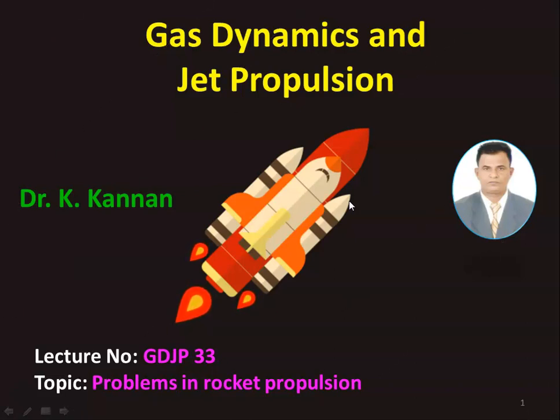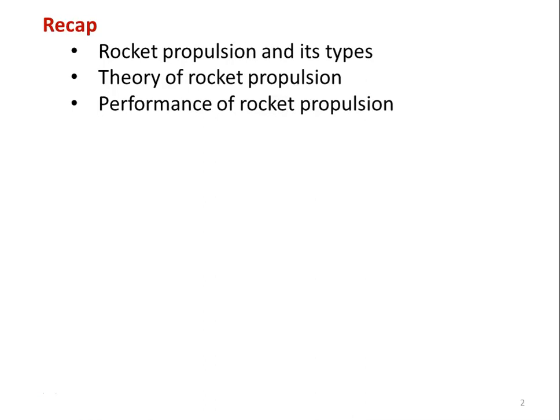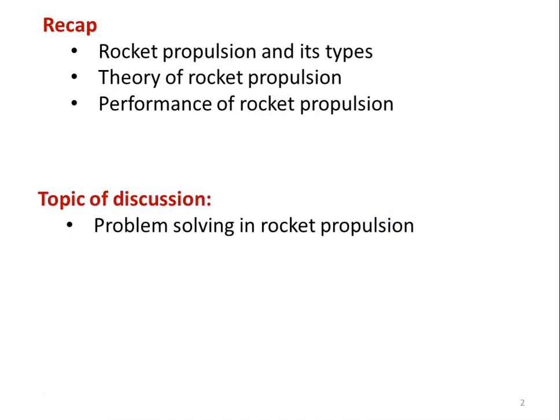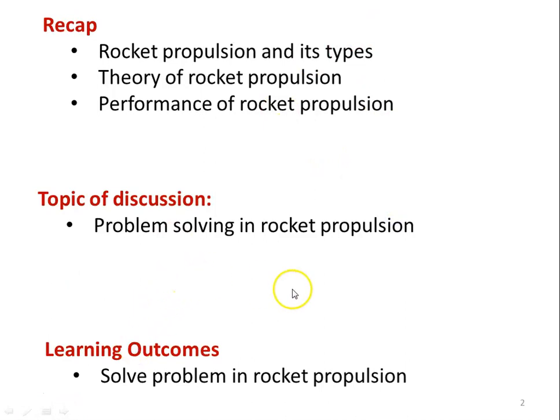This is lecture number 33 and the topic is Problems in Rocket Propulsion. In the earlier lecture, we discussed the working of different rocket engines, the theory of rocket propulsion, and the performance parameters such as thrust produced, specific impulse, propulsive efficiency, thermal efficiency, and overall efficiency. In this lecture, we will be solving problems in rocket propulsion, taken from previous question papers. The learning outcome: students will be able to solve problems in rocket propulsion.